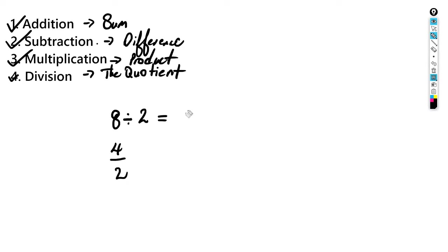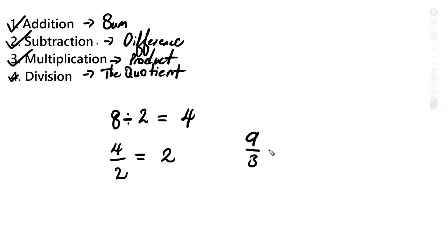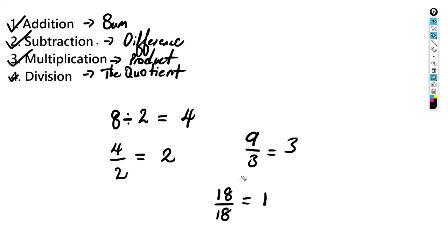Eight divided by two gives you four, and four divided by two gives you two. Nine divided by three gives us three. Eighteen divided by eighteen gives us one. That's division in a nutshell — the answer is called the quotient. Pretty easy.